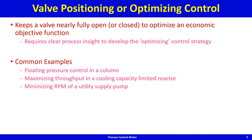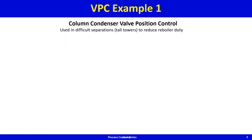Common examples include floating pressure control in a column, maximizing throughput in a cooling-capacity-limited exothermic reactor, and minimizing RPM of a utility supply pump. We'll look at all three of these examples. Example one is distillation column control.